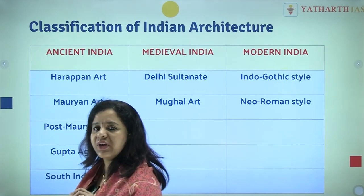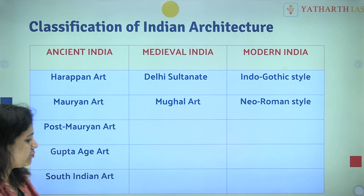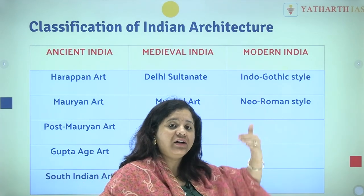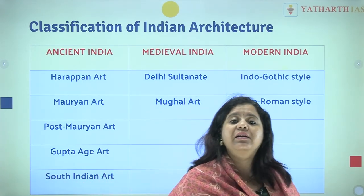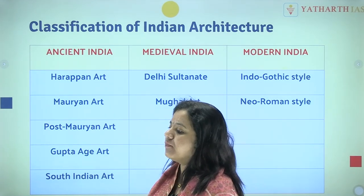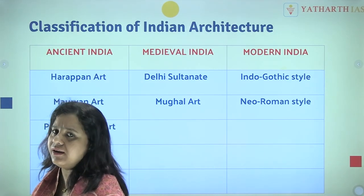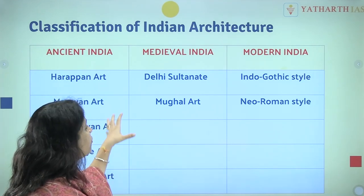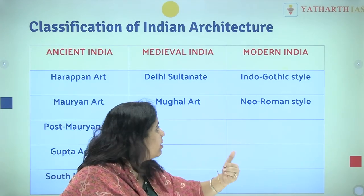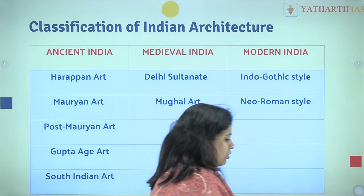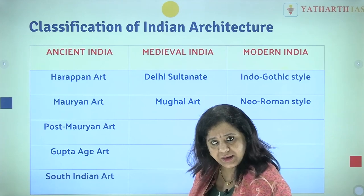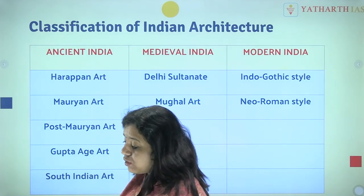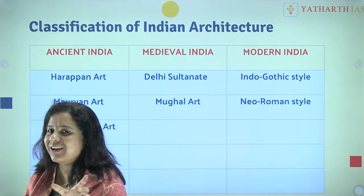Let me see the classification of Indian architecture. I am dividing it into three periods — ancient India, medieval India, and modern India — so that you can relate it to Indian history, be it ancient, medieval, or modern.